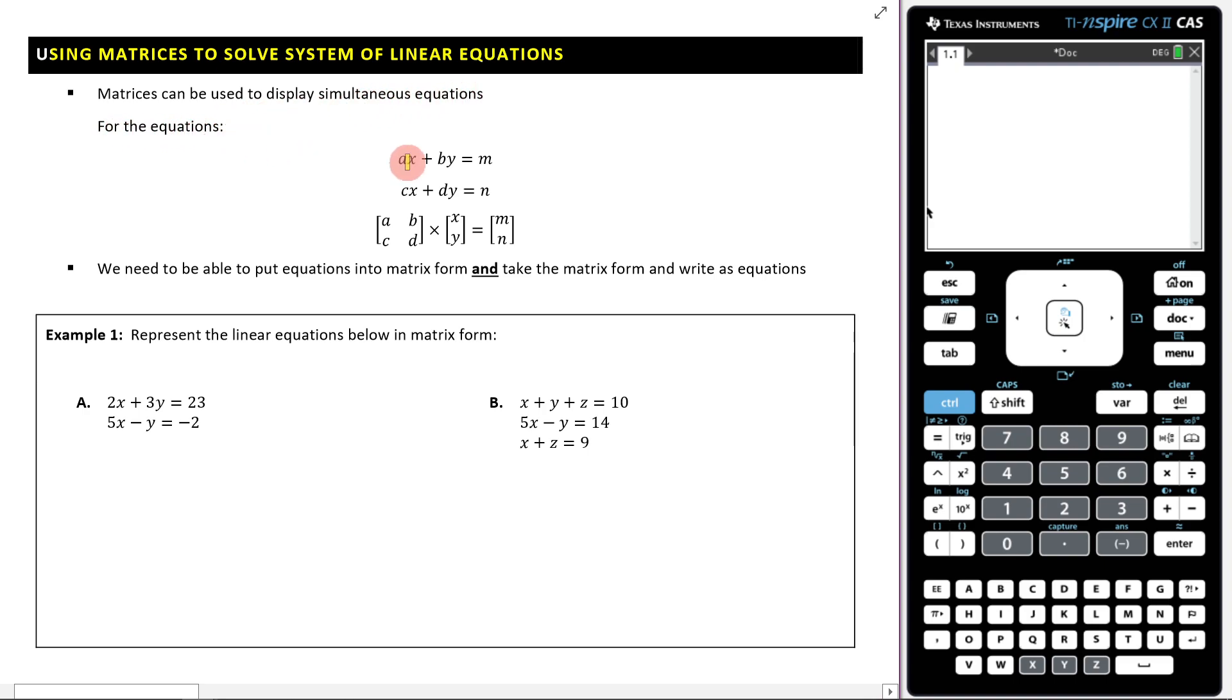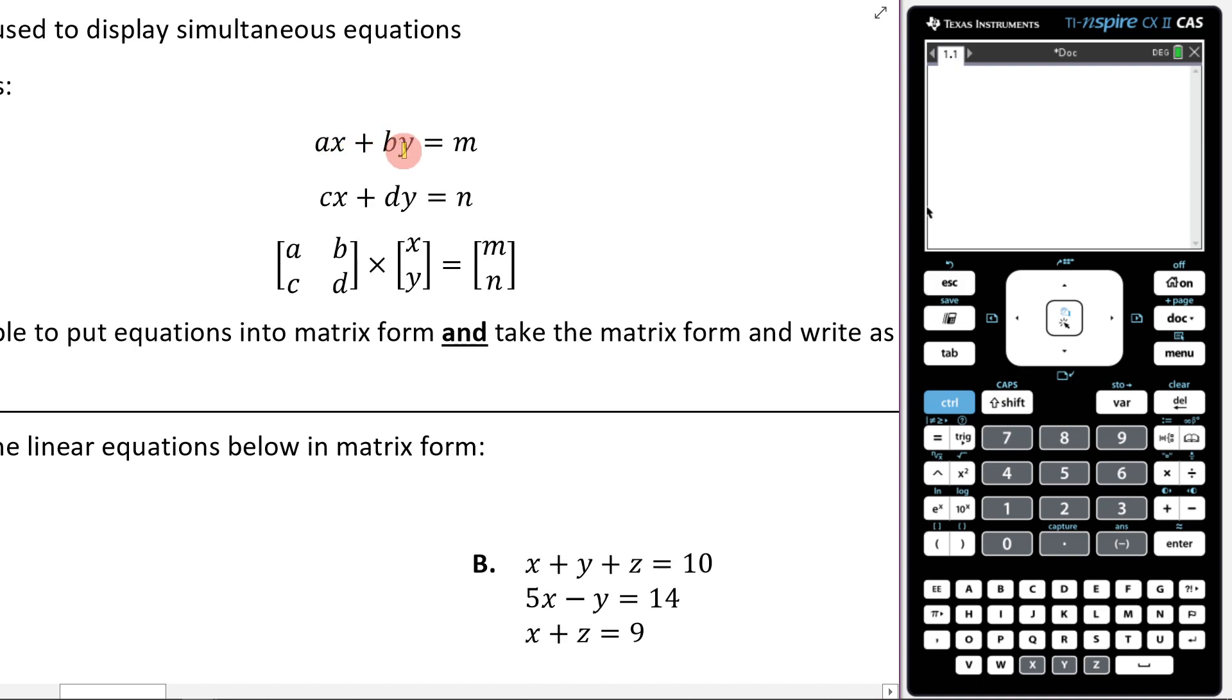For the equations, as you can see, we've got ax plus by is equal to m, and then cx plus dy is equal to n.